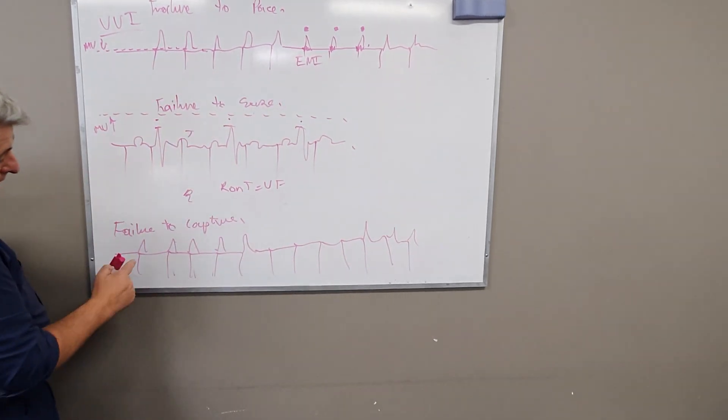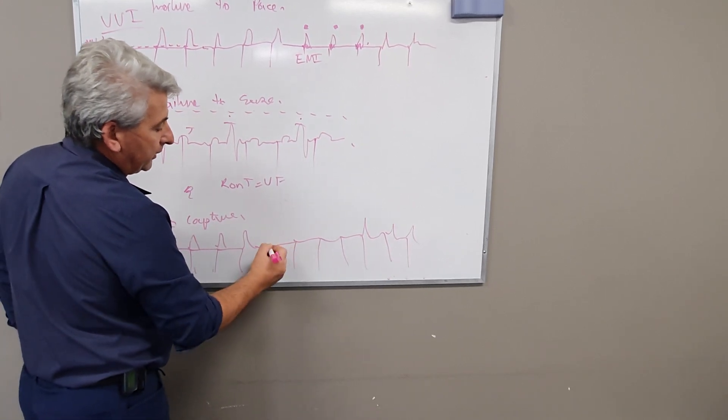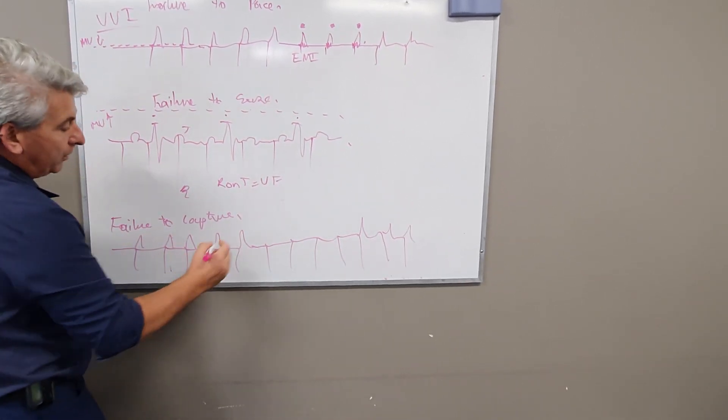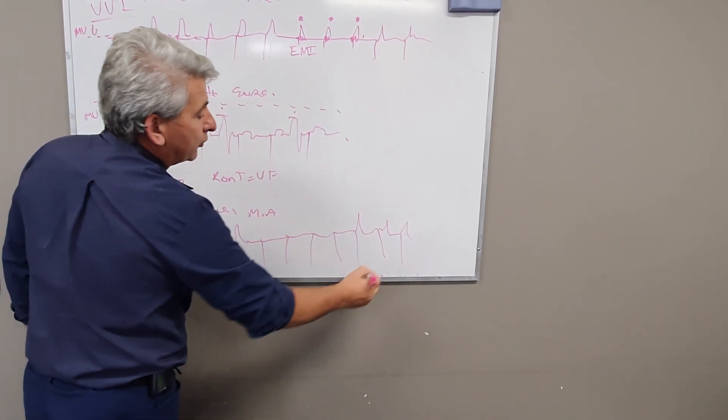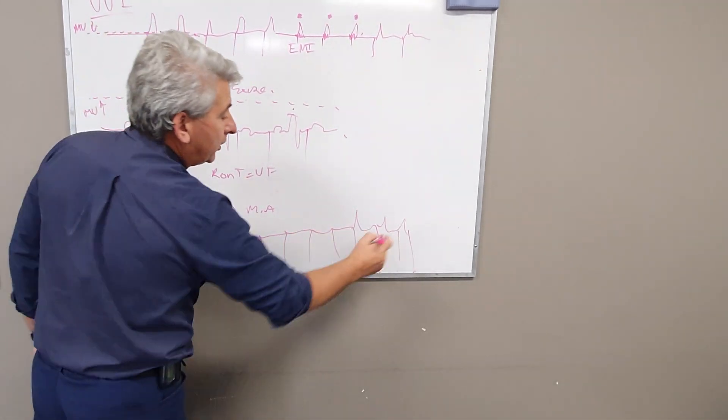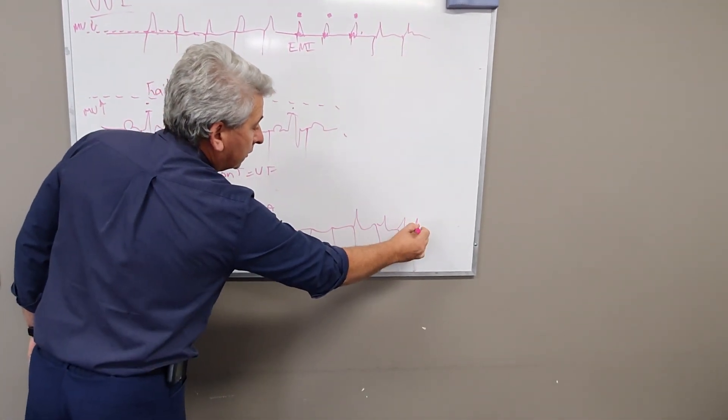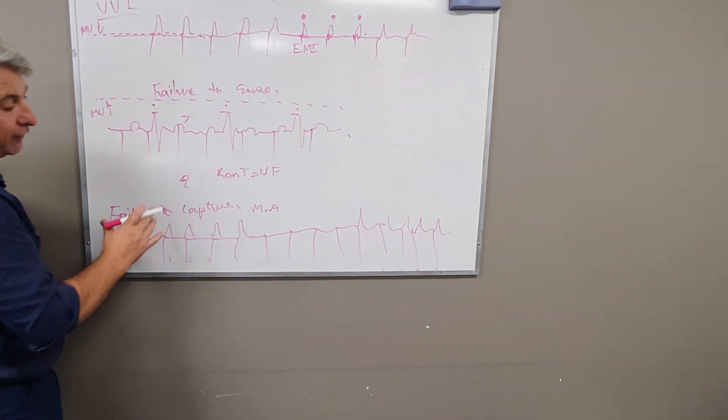So what's happened here is pace, capture, pace, capture, pace, capture. Here I pace, pace, pace, but not followed by any capture. All it means is your milliamps are too low. Increase the output, or the milliamps, so theoretically making the pacing spike longer, and that will always then result in a rectification of the failure to capture.